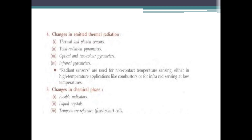The fourth classification is based on changes in emitted thermal radiation. This uses thermal and photon sensors, including total radiation pyrometers, optical and two-color pyrometers, and infrared pyrometers. Radiant sensors are mainly used for non-contact temperature measurement, combustion, and infrared sensing.